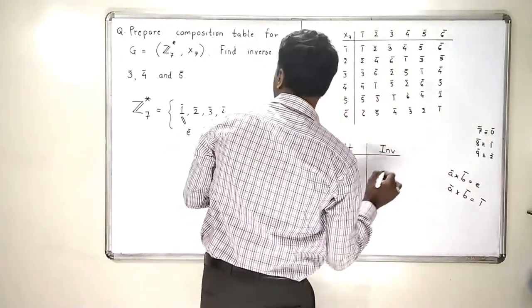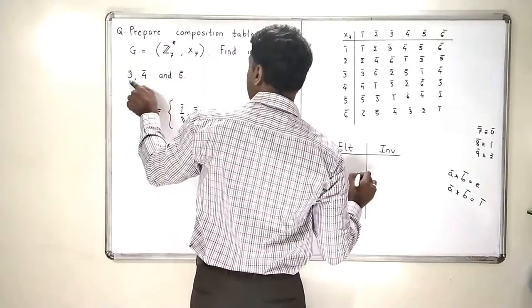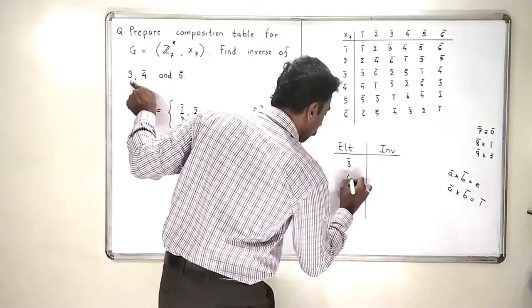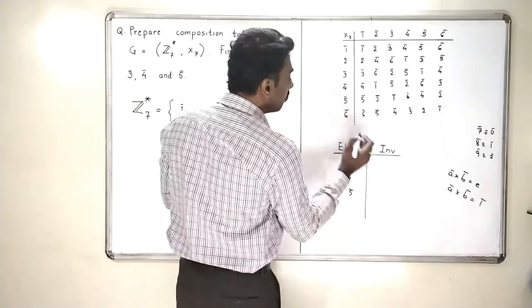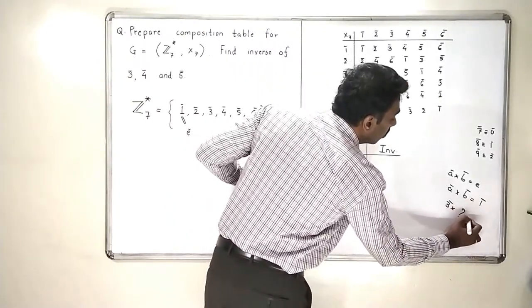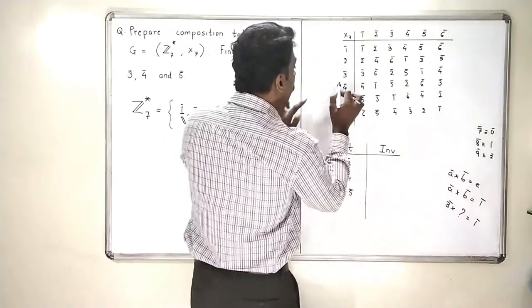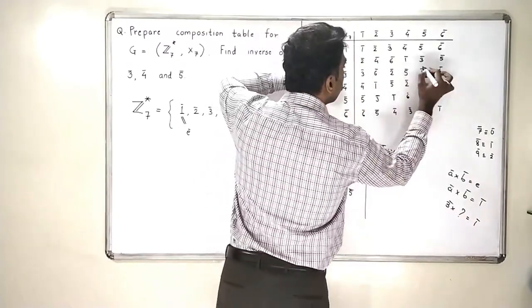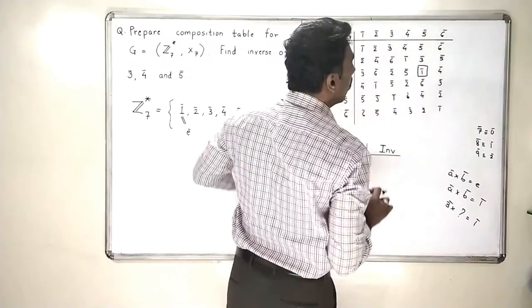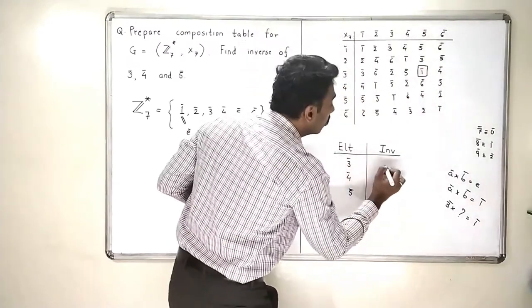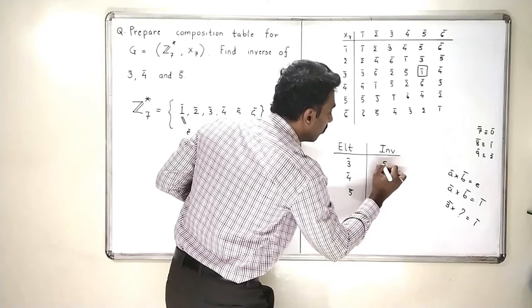So, we are asked the inverses of 3 bar, 4 bar and 5 bar. What is the inverse of 3 bar? 3 bar multiplied by which person is giving me 1 bar? I will go in 3 bar and search for 1 bar here. Here I will get that 3 bar multiplied by 5 bar is 1 bar. So, 5 bar is the inverse.